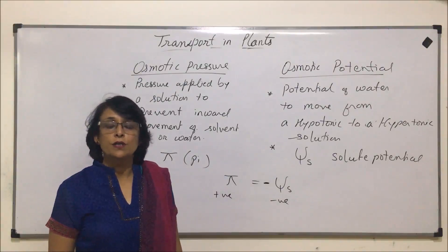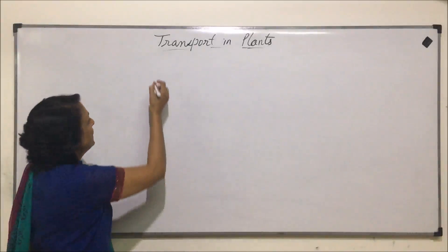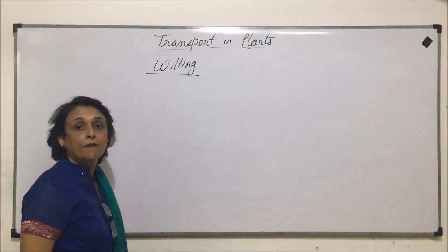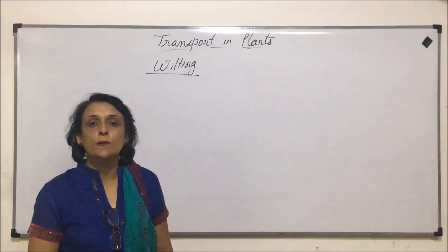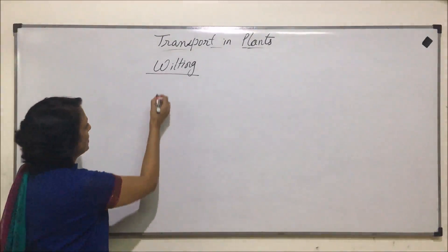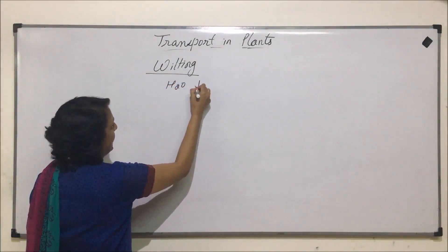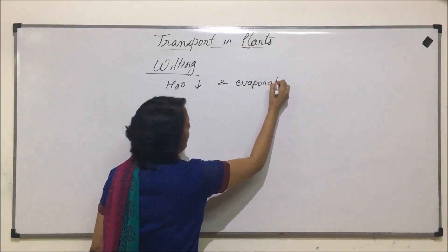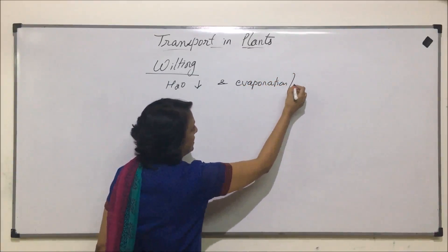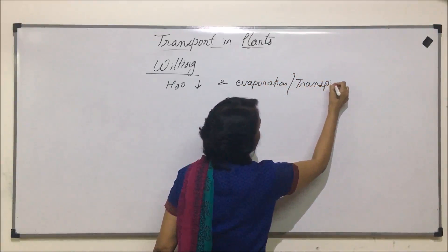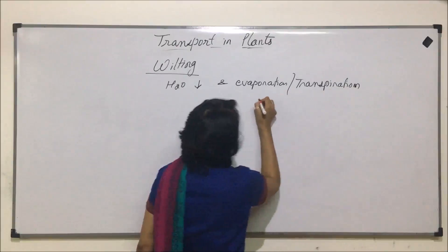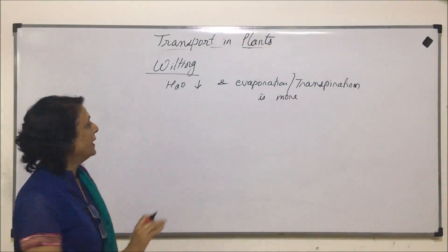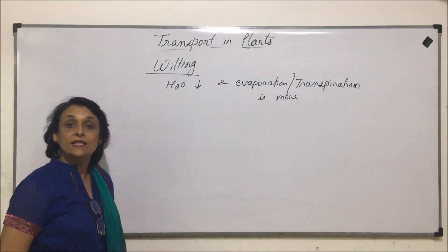Another important term to discuss is wilting. When we use the term wilting, it is again with reference to water. There are situations when a plant wilts — one situation is when water availability is less and evaporation or transpiration is more. That can be the situation when the plant shows wilting. When wilting takes place, there are three stages of wilting.